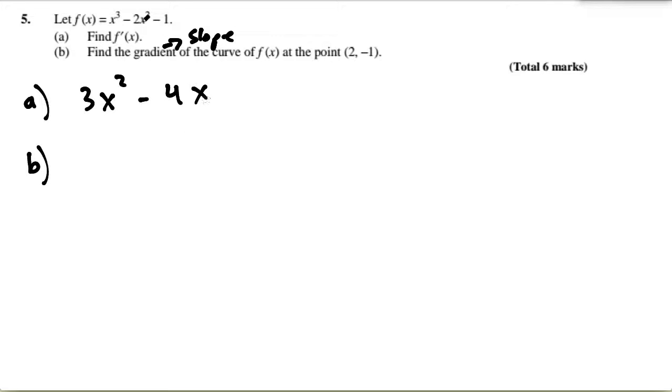What you do is take this derivative and use this point right here, particularly the x value, and plug it into the derivative. So 3 times 2 squared minus 4 times 2, that's 3 times 4 minus 8, 12 minus 8, which equals 4.